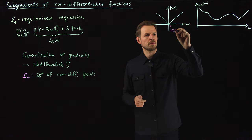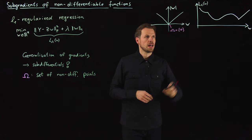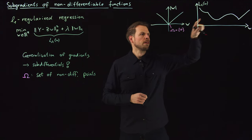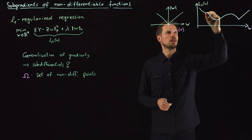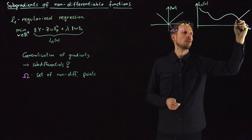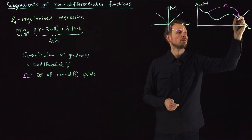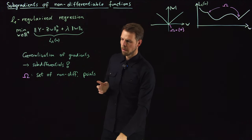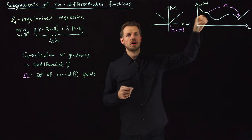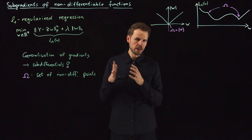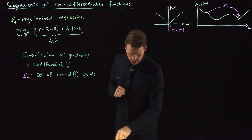For a more general problem, you may have a loss function that has two non-differentiable points, so the set omega would consist of those two points. The sub-differential is defined everywhere, but everywhere the function is smooth, it will simply coincide with the gradient. Only at the non-differentiable points is it truly more than the gradient itself.